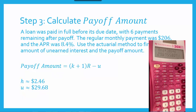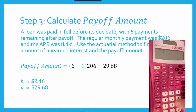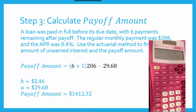And that brings us to step 3: calculate the payoff amount. We need to plug in K, which is 6; R, which is 206; and U, which is 29.68. Now be careful plugging this into your calculator. It's an easy formula compared to the others, but it's easy to make a mistake. A common error is that folks want to subtract 206 minus 29.68, but remember order of operations — first we work inside the parentheses and do the addition, which gives us 7. Then we multiply by 206, and then subtract 29.68. So: 7 times 206, equals, minus 29.68, equals. Our payoff amount is $1,412.32.